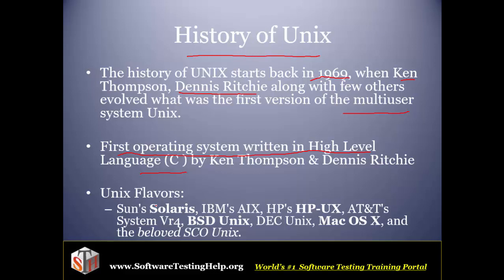There are different flavors of Unix available. As you can see, Sun Solaris, IBM AIX, and so many more flavors are available depending upon the different features which each provides.